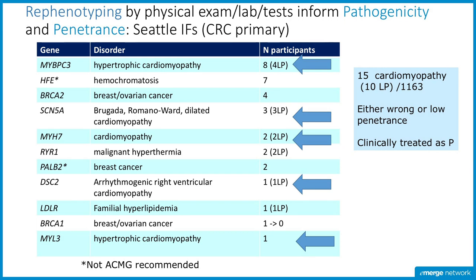This is just an example of the incidental findings from our Seattle site. One of the points I want to make is that there are a lot more cardiomyopathy results than there ought to be. Cardiomyopathy should be about one in 300 to one in 500 at most. Out of 1,163 people, that's just too many.